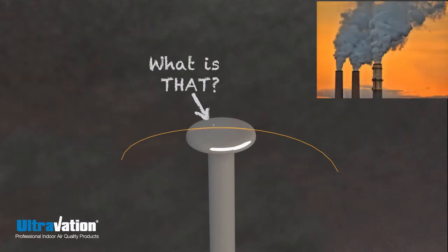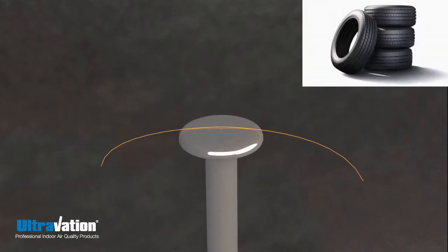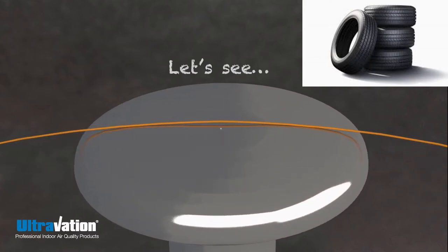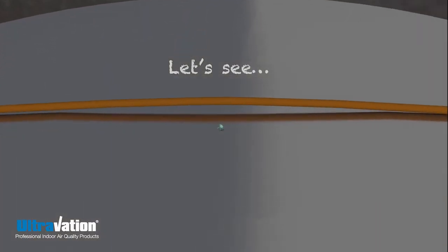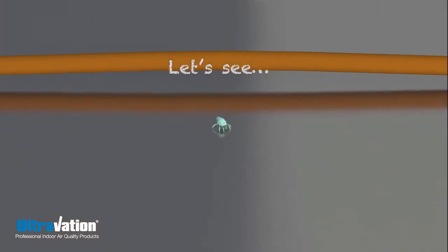And some of it comes from smokestacks, car tires, or all sorts of other places. There are a lot of bits and pieces of stuff in the air, and they're usually very small, much less than an inch in size.